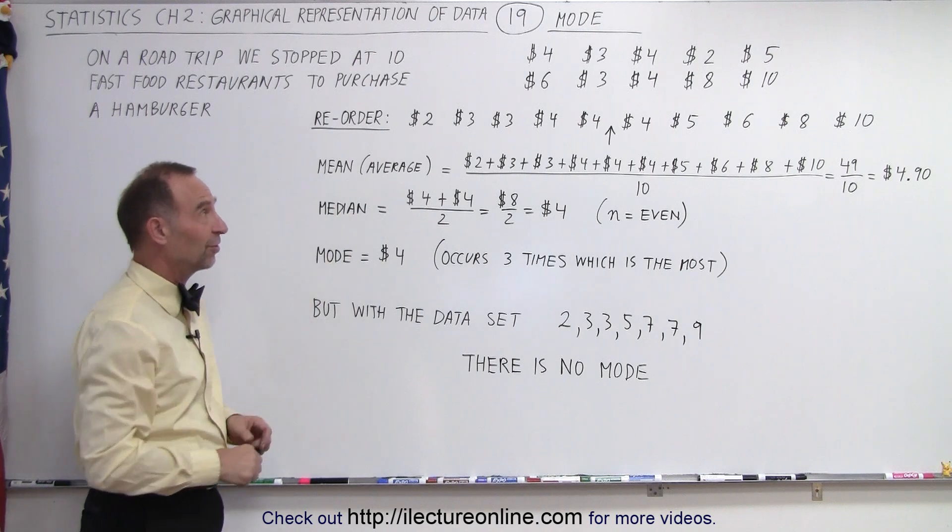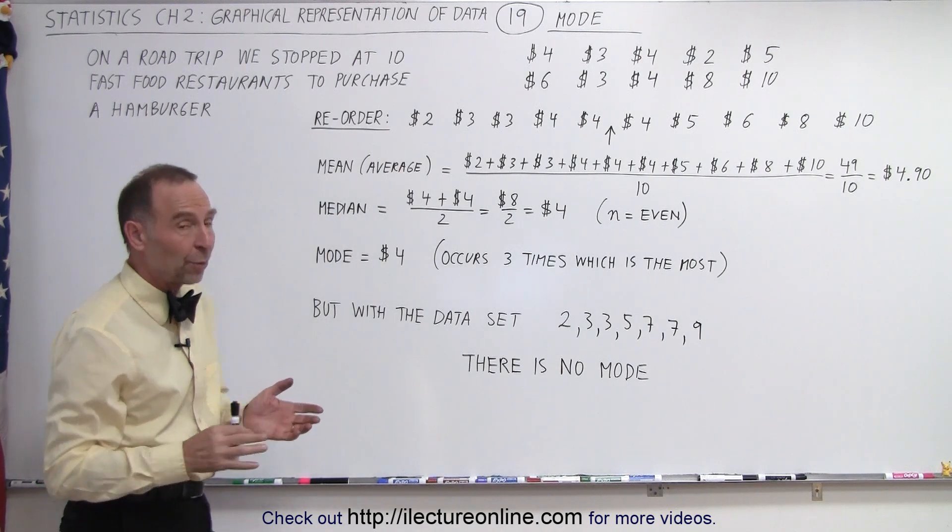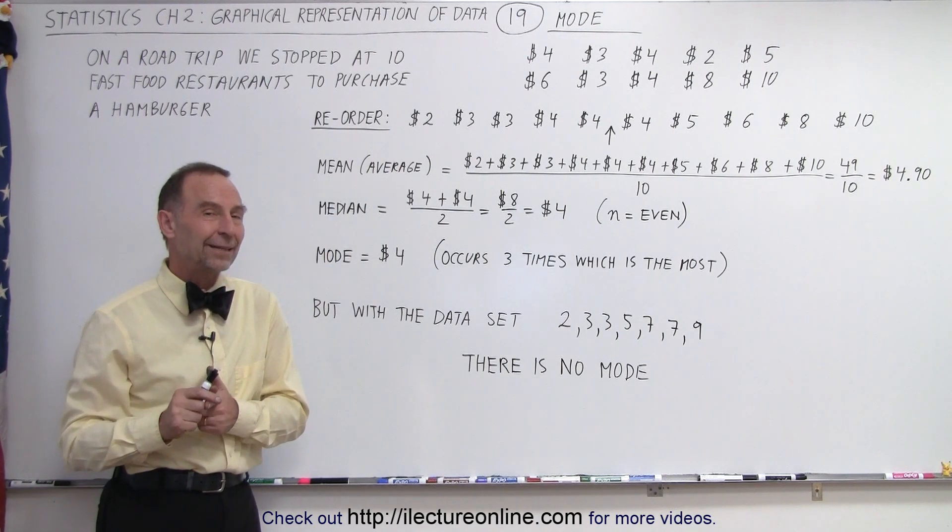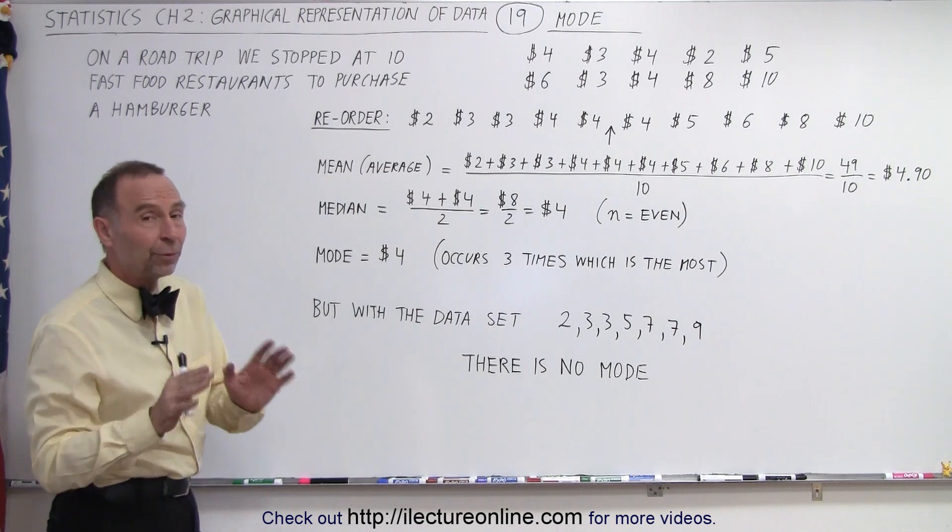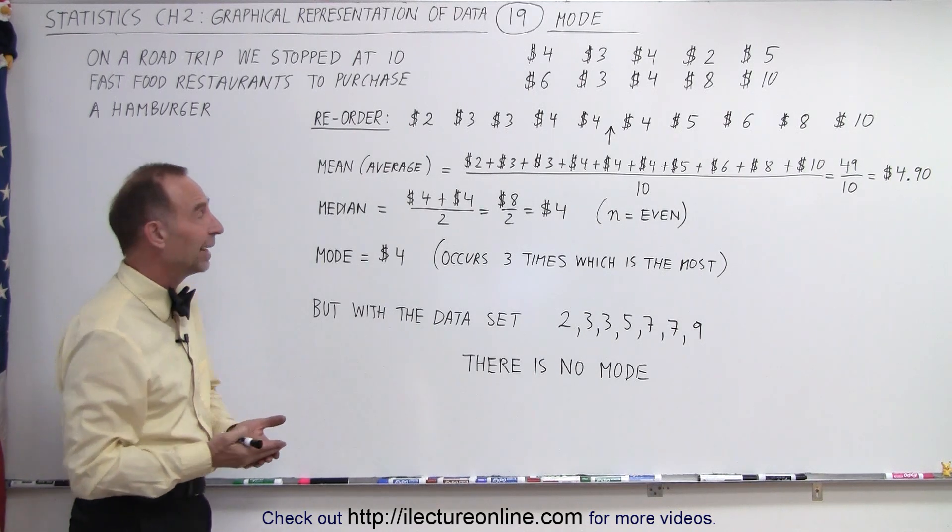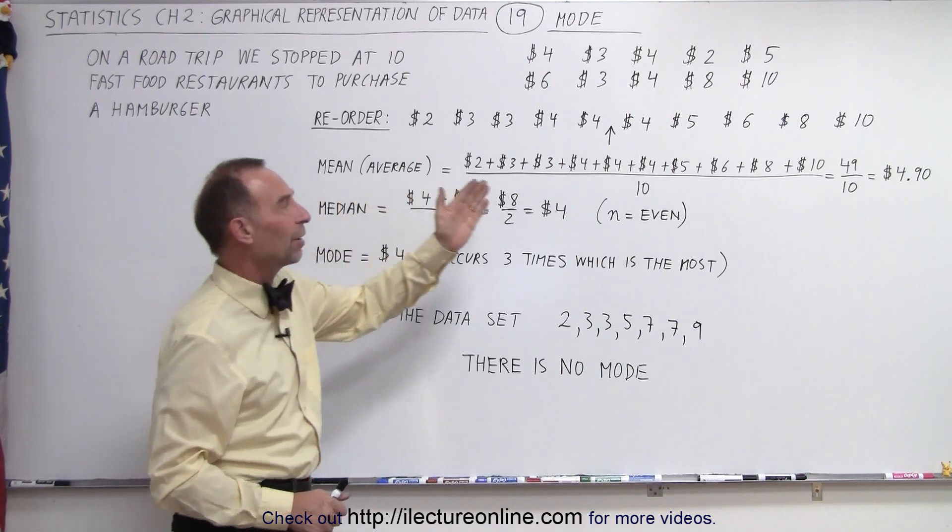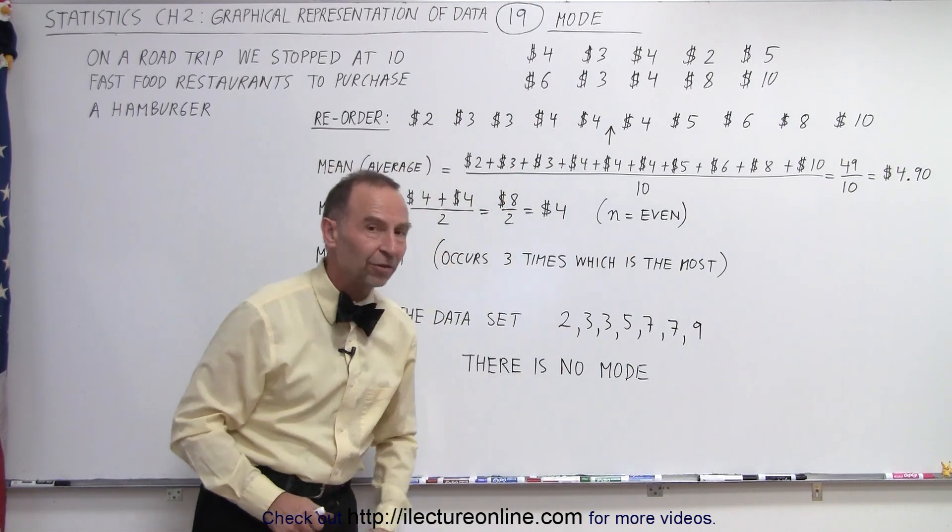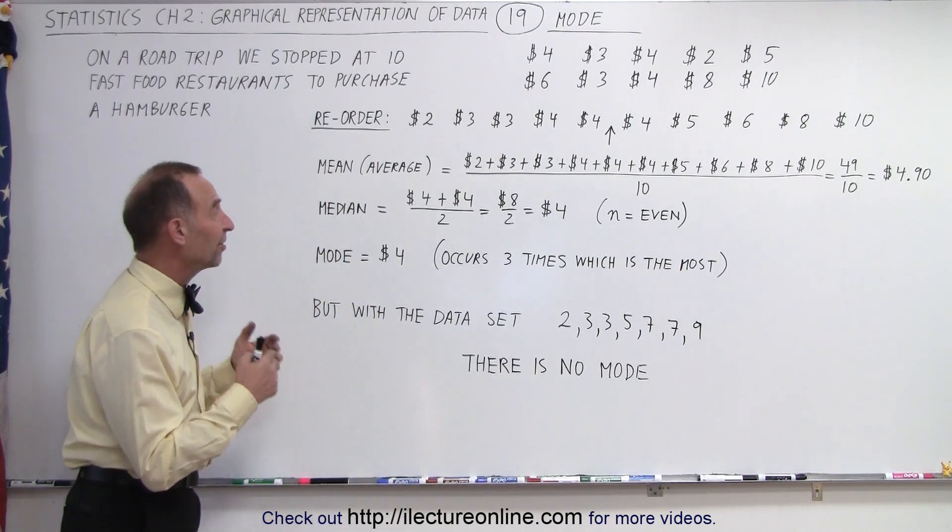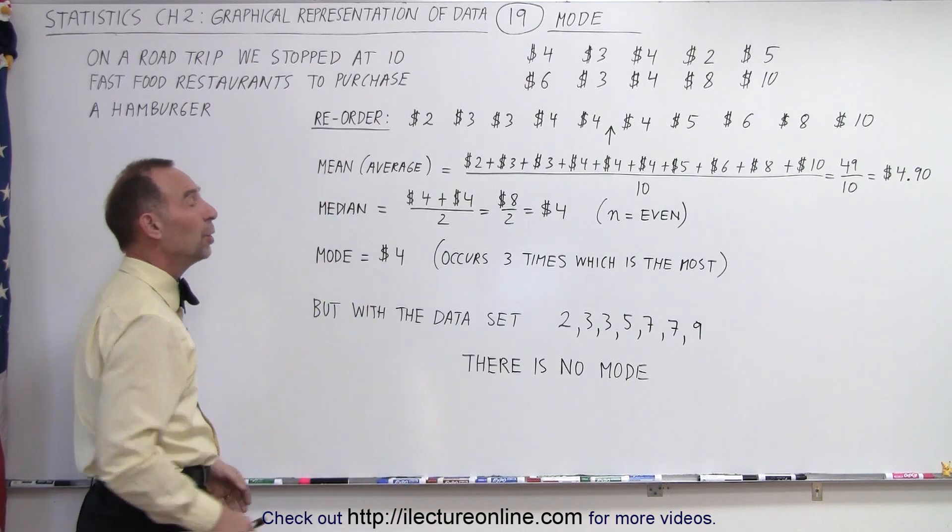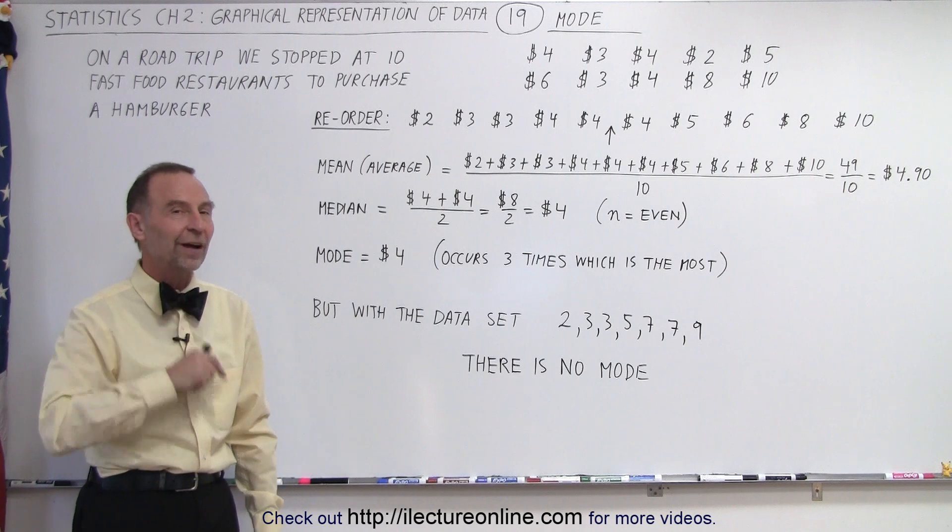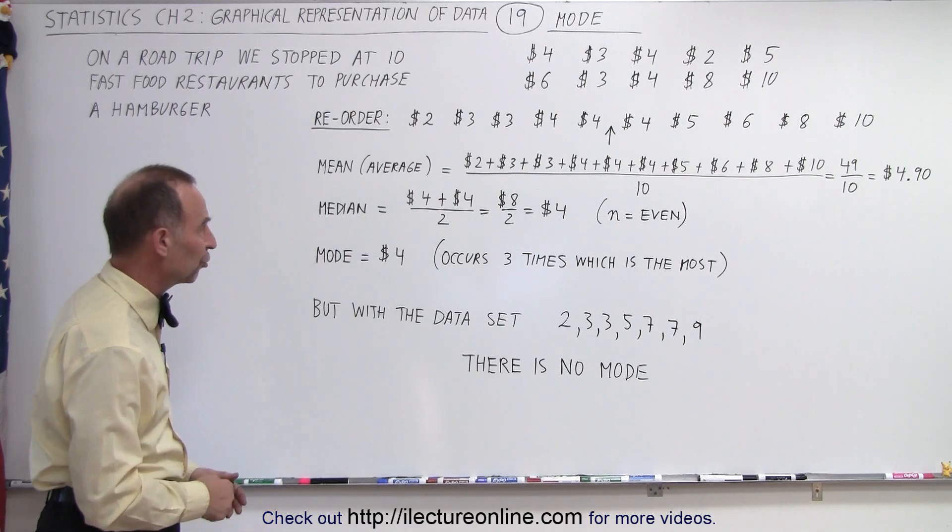These are the 10 prices that we paid. Now what we're going to do is calculate the mode, but before we do that, we're also going to calculate the mean or the average and the median. So first, we're going to reorder the prices from cheapest to most expensive. We need to do that because it makes it easier to find the median and the mode. We don't need to do that to find the mean or the average.